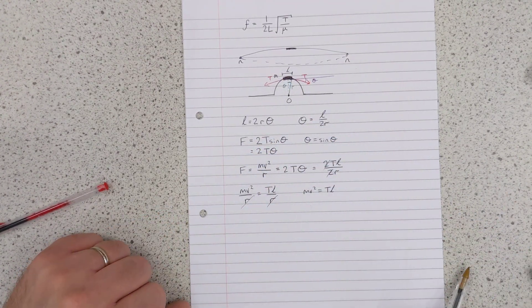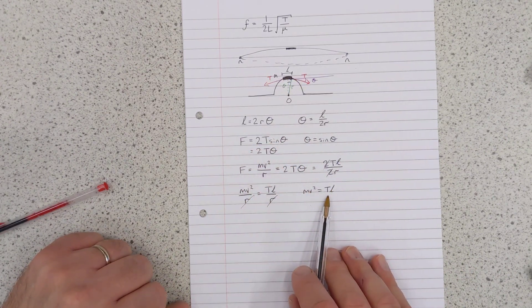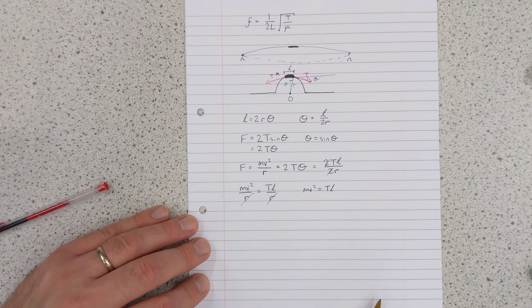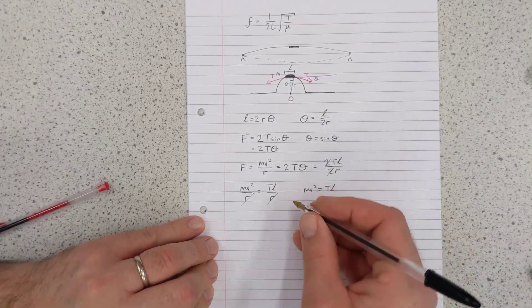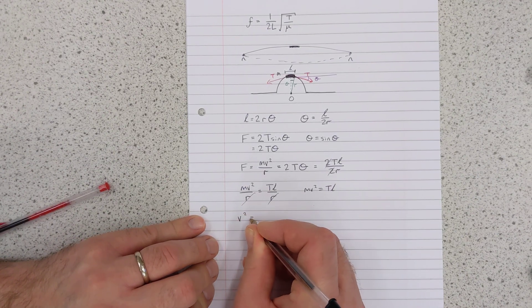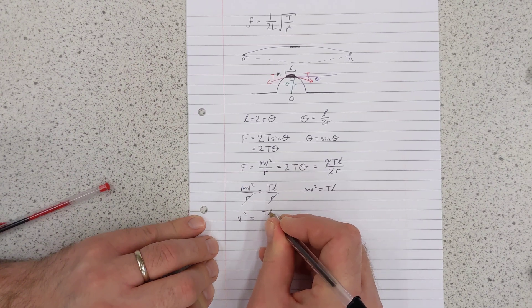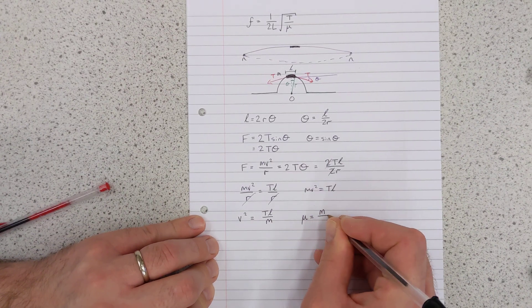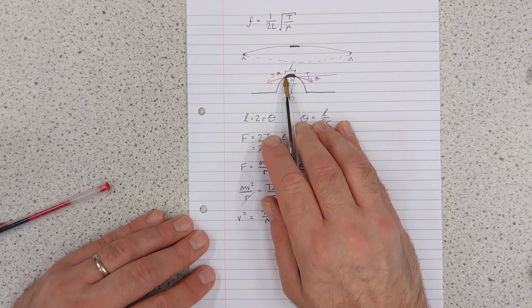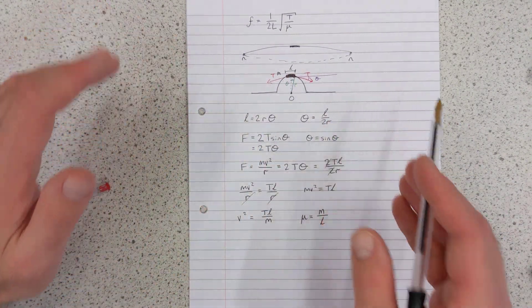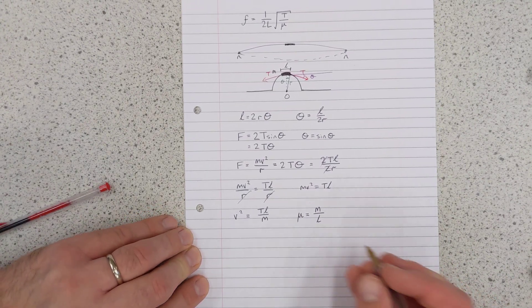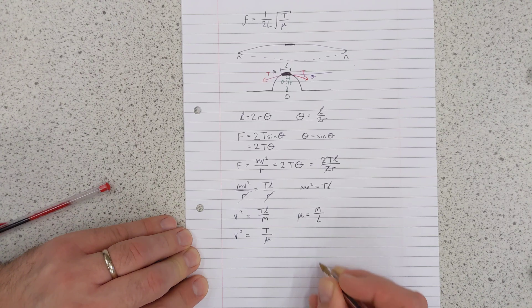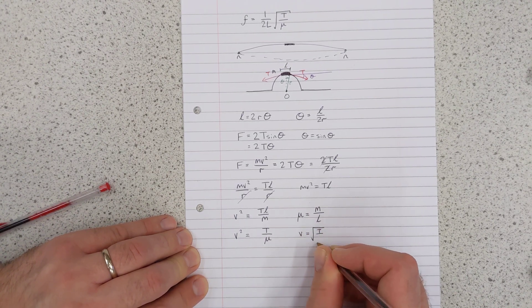So you are left with mv squared equals T L. Remember, L is the length of this element of string that we're considering. T is the tension in the string. m is the mass of that element of string. And v squared is the square of the speed of the progressive wave. So what we can do is we can rearrange this to get v as the subject. So let's start with v squared. v squared is going to equal T L over m. But we could define the mass per unit length as m over l. So for this element, its mass divided by its length is going to be the same as the mass per unit length for the whole string, because it's a uniform string. So now we can plug this into the equation. v squared is going to equal T over mu. And therefore, v is going to equal the square root of T over mu. Starting to look familiar.